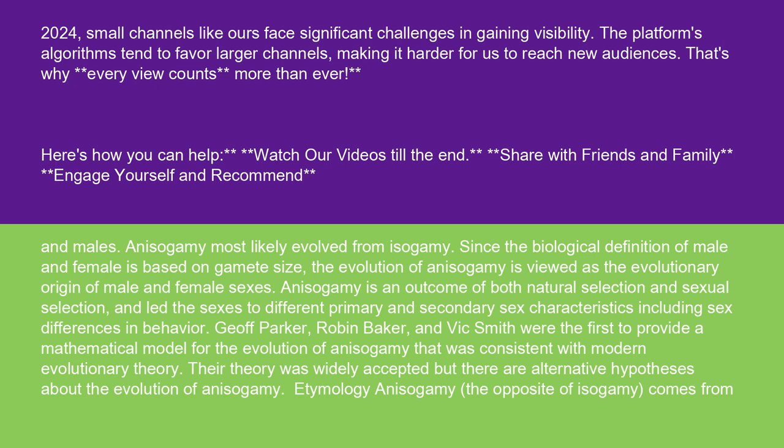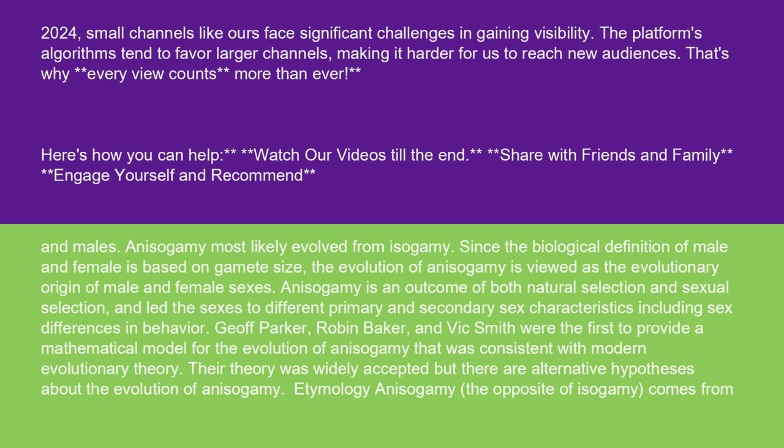Etymology: anisogamy, the opposite of isogamy, comes from the ancient Greek negative prefix an- (alpha privative), the Greek adjective isos meaning equal, and the Greek verb gamio meaning to have sex or to reproduce, eventually meaning non-equal reproduction, obviously referring to the enormous differences between male and female gametes in size and abilities. The first known use of the term anisogamy was in the year 1891.